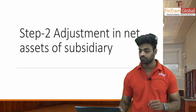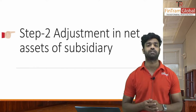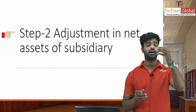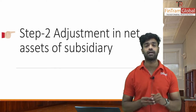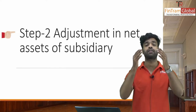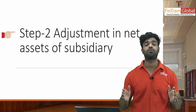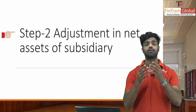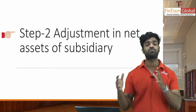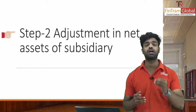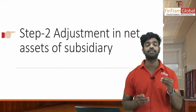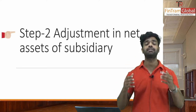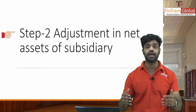The next step is adjustment in net assets of subsidiaries. The net assets of the subsidiary will be adjusted. If you acquire a subsidiary mid-year, we need to adjust how to divide the profit. If there are any transactions between the parent and subsidiaries, or any PURP — which is the Provision for Unrealized Profit — these are addressed in this second step of adjusting net assets.